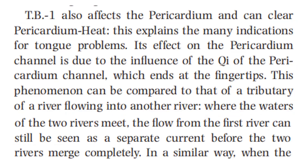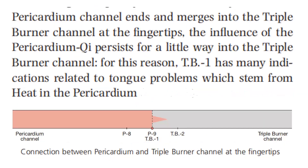TB1 also affects the pericardium and can clear pericardium heat, which explains the many indications for tongue problems. Its effect on the pericardium channel is due to the influence of the qi of the pericardium channel, which ends at the fingertips. This phenomenon can be compared to a tributary of a river flowing into another river — when the pericardium channel ends and merges into the triple burner channel at the fingertips, the influence of the pericardium qi persists for a little way into the triple burner channel. TB1 therefore has many indications relating to tongue problems stemming from heat in the pericardium.